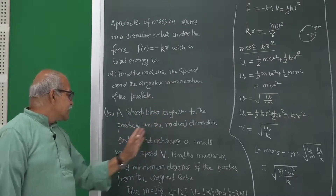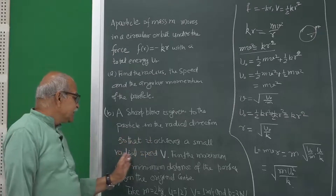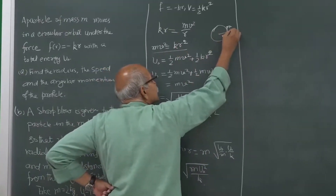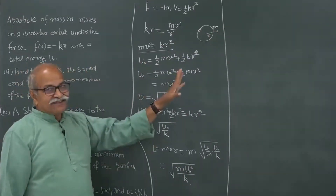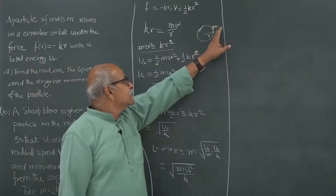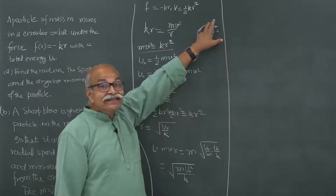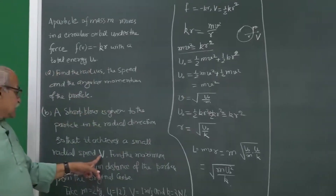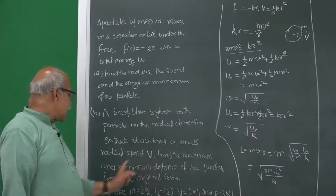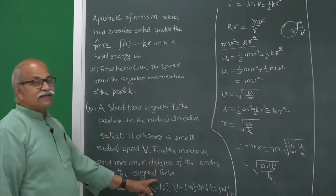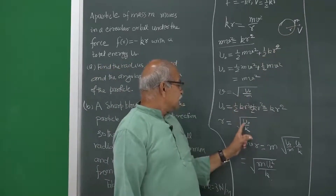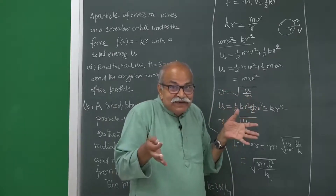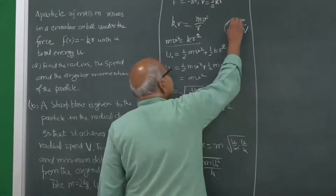Now, a sharp blow is given to the particle in the radial direction so that it achieves a small radial speed capital V. The particle is going with the tangential speed v, and then it is given a sharp blow in the radial direction — a force applied for a short time in this direction. This will create a velocity in the radial direction, but the tangential velocity will still remain the same. We need to find the maximum and minimum distance of the particle from the original center.